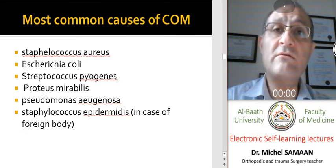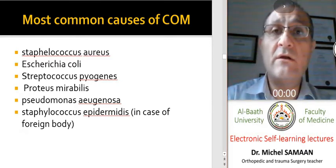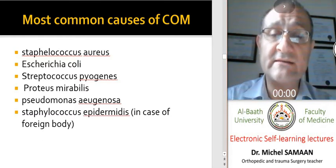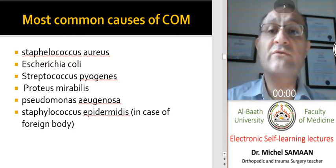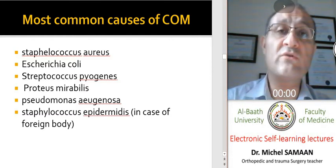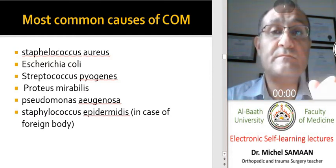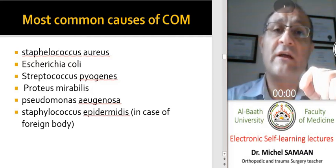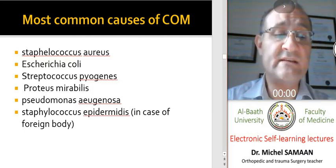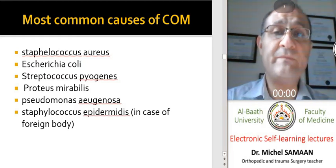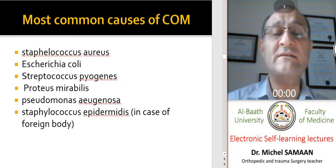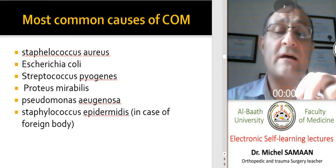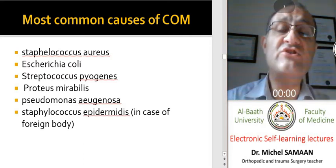A large number of bacteria may cause chronic osteomyelitis, including Staphylococcus aureus and Streptococcus pyogenes. Anaerobic bacteria and Escherichia coli also play an important role. Importantly, unlike acute osteomyelitis, the germs causing the infection may change from time to time.